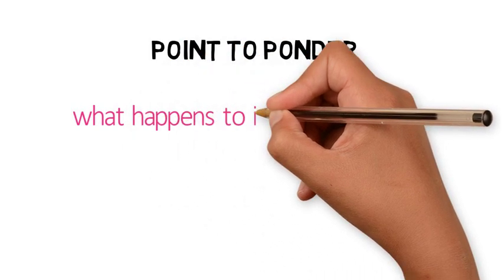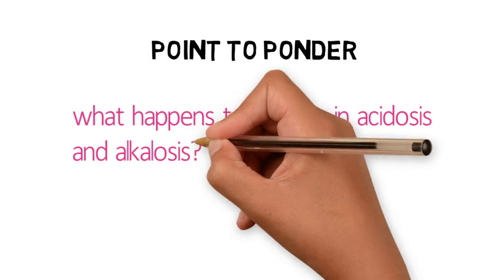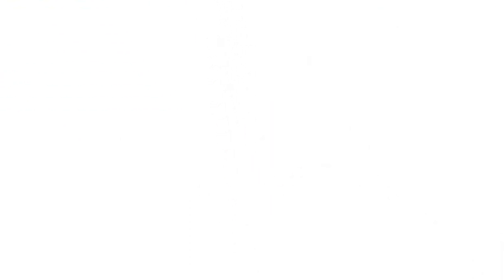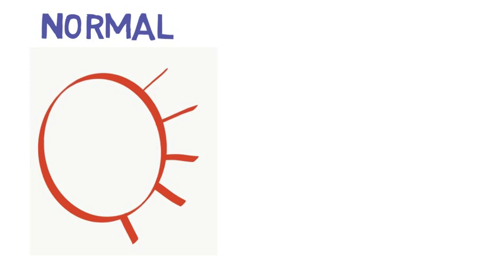What happens to ionic calcium when there is acidosis or alkalosis? Under normal conditions, hydrogen is also bound to albumin, similar to calcium.